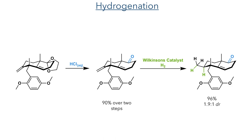The alkene formed from the Wittig reaction was then hydrogenated using Wilkinson's catalyst and hydrogen gas. This formed the product in a 96% yield with a 1.9 to 1 dr. The researchers screened a wide range of conditions for this reaction, however they were not able to improve on this stereoselectivity.